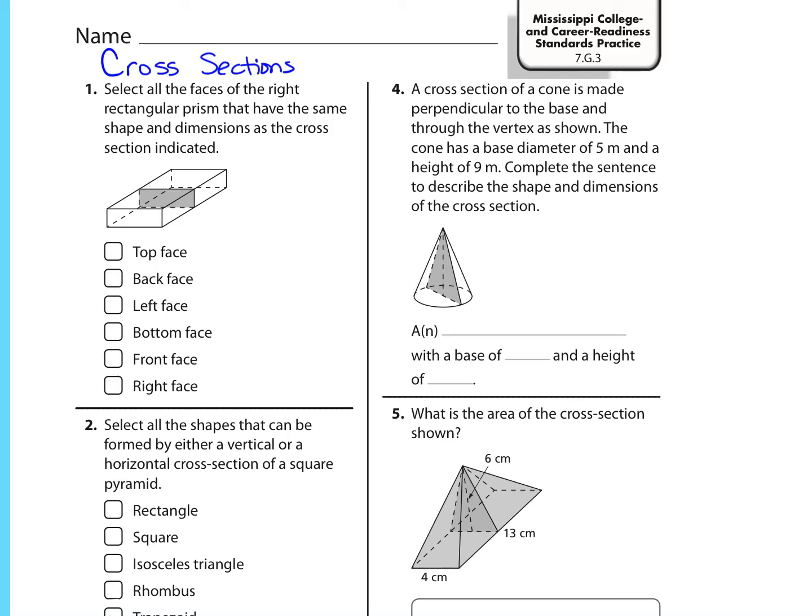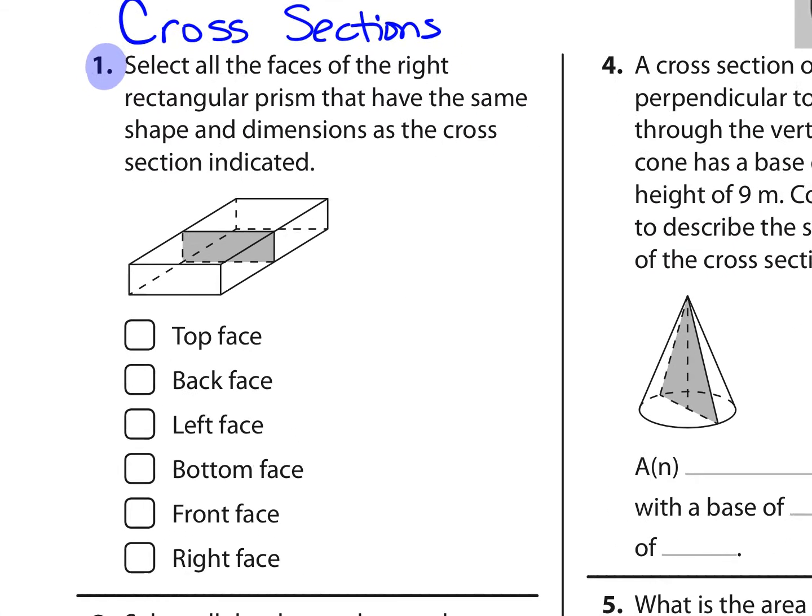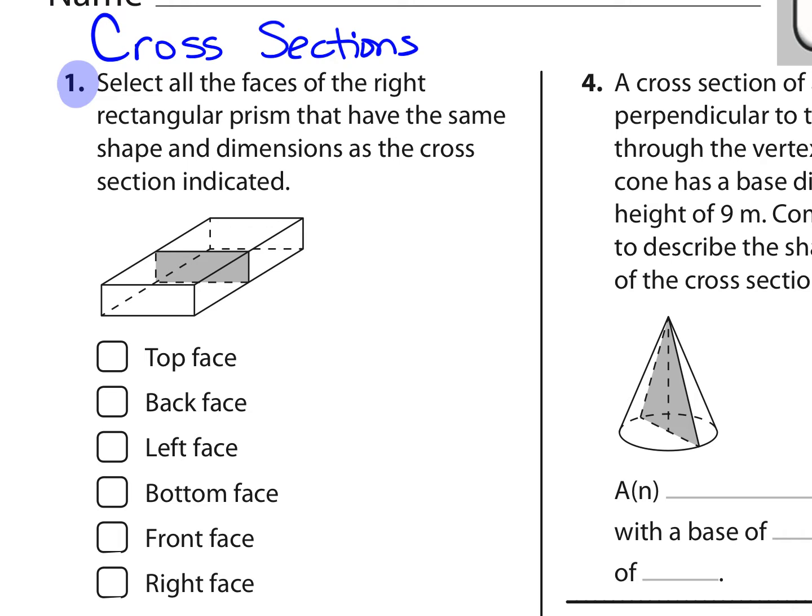Standard 7G3, this one is about cross sections. If we look at this first question, select all the faces of the right rectangular prism that have the same shape and dimensions as the cross section indicated.